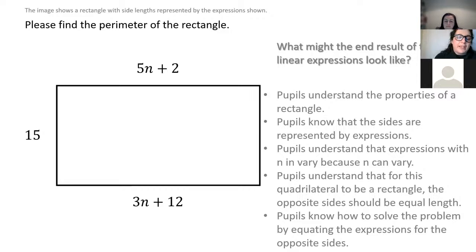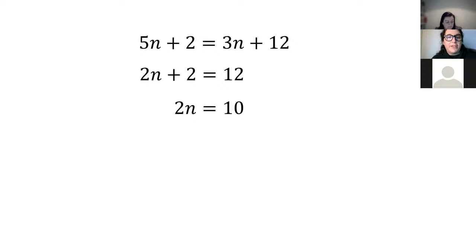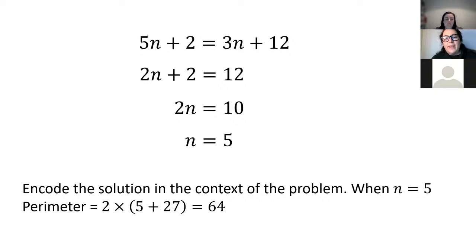Without being told this is a solving equations problem, students might just try guess-and-check with different values of n — which is actually good, because it shows they understand what n represents. A fluent response would have students equate the expressions using algebraic discipline to create an equation, manipulate it to solve it, and arrive at n equals 5. Unfortunately, for some students that's where it stops — they don't go back to encode the solution in the context of the problem to find the actual perimeter.